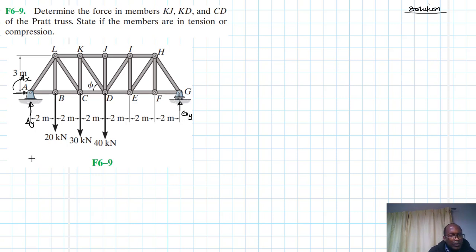Alright, then we have summation of moments about point A equal to zero. So summation of moments about point A equal to zero, and clockwise being a reference, we have minus moment 20 by 2, minus 30 by 4, minus 40 by 6, then plus GY by 12.